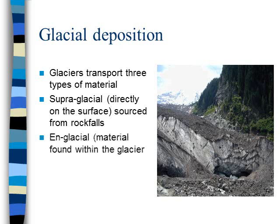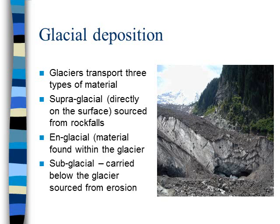The second type is englacial load — material found within the glacier. It may fall down crevices or cracks in the ice and is then carried downhill within the body of the glacier. The third type is subglacial load — material carried beneath the glacier at the bottom. This material is ground into a fine powder under the ice, but eventually it will be deposited at the end of the glacier.